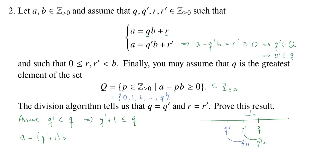Okay, so down here, because Q prime plus 1 is less than or equal to Q, this tells us that Q prime plus 1 is in the set Q. And that tells me, then, that A minus Q prime plus 1 times B should be greater than or equal to 0.